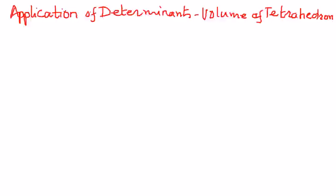Welcome to my presentation. In this presentation, we shall try to find the volume of a tetrahedron using determinants. So, the volume of a tetrahedron whose vertices are given to us as follows can be found by this formula. Let me write this down here.